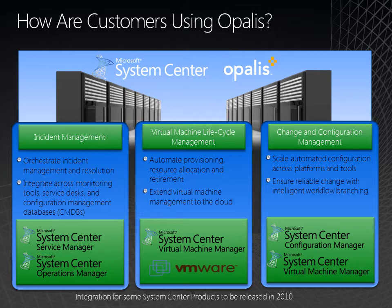For Virtual Machine Lifecycle Management, we're talking about the provisioning and decommissioning of virtual machines, which can also extend to bare-metal provisioning and decommissioning. For Change and Configuration Management, we're talking about all of those change management processes that you have to assign to people. Well, once they're approved, Opalis can take them, run them, and close out the change management request — and you won't have to handle any of those manual tasks ever again.